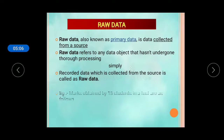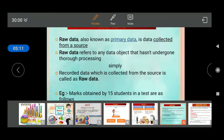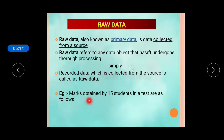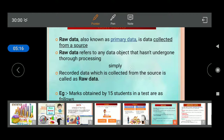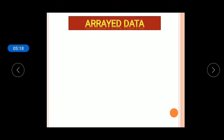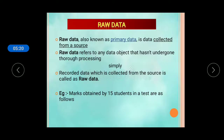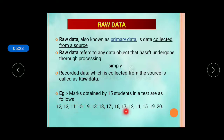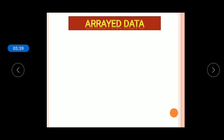For example, marks obtained by 15 students in a test — written as 12, 13, 11, 15, 19, 13 — are not arranged in any order; they are written as collected from the students. This is called raw data.